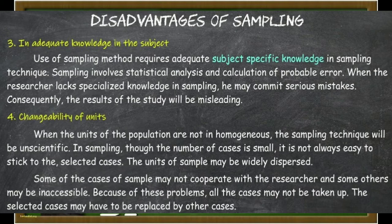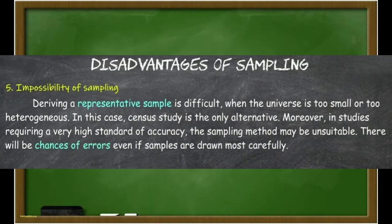The last disadvantage of sampling is impossibility of sampling. Deriving a representative sample is difficult when the universe is too small or too heterogeneous. In this case, census study is the only alternative. Moreover, in studies requiring a very high standard of accuracy, the sampling method may be unsuitable. There will be a chance of errors even if samples are drawn most carefully.